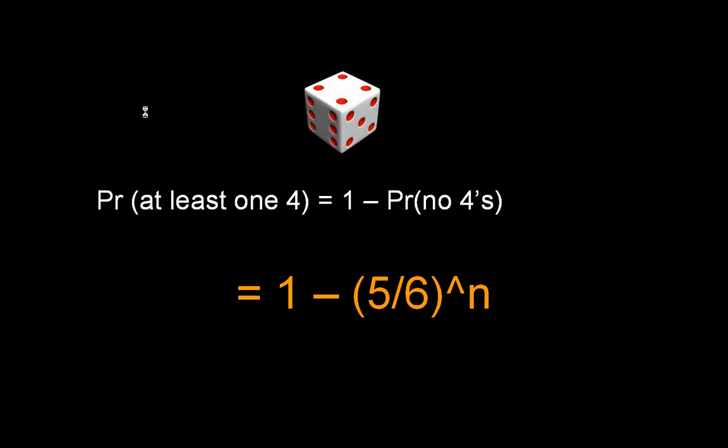Why don't we take a small n? n is one is sort of trivial—one minus five by six, which is the probability of getting a four. But let's do it for n is equal to two. n is equal to two means that we're going to throw the die twice, in which case, as we know, there will be 36 strings.